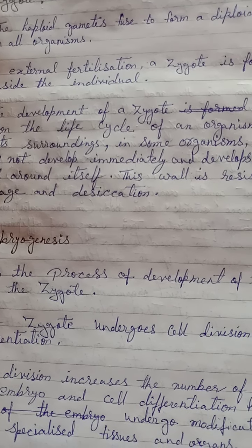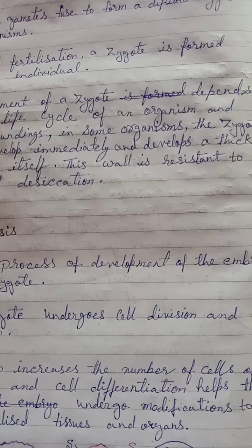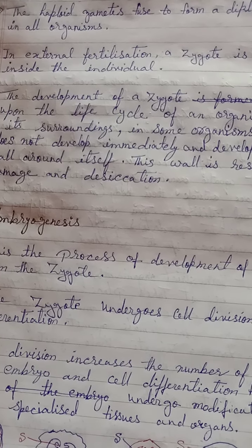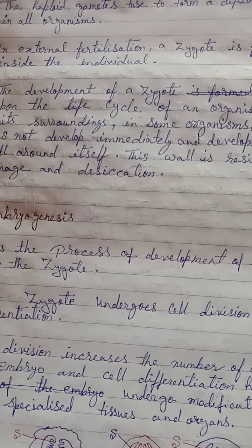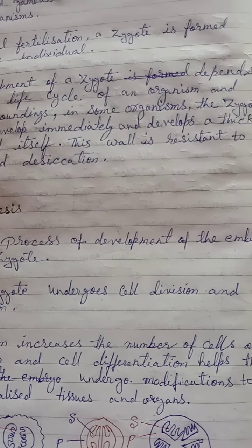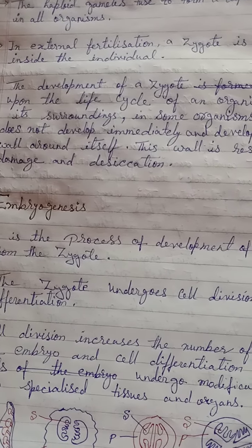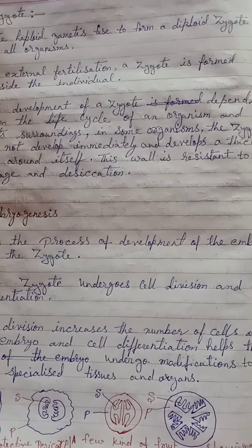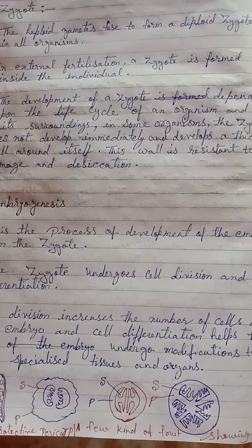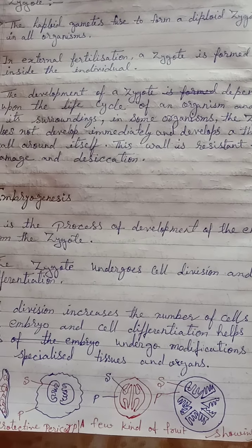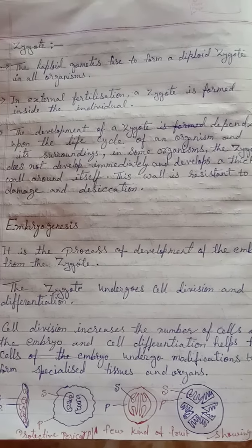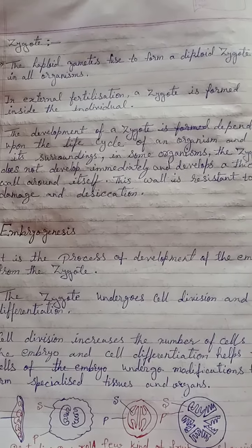In external fertilization, a zygote is formed inside the individual. The development of a zygote depends upon the life cycle of an organism and its surroundings. In some organisms, the zygote does not develop immediately and instead develops a thick wall around itself. This wall is resistant to damage and desiccation.